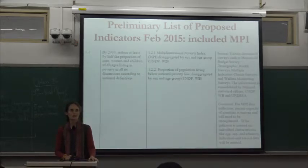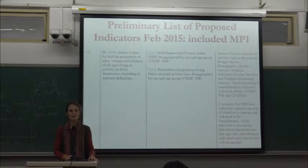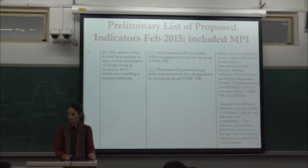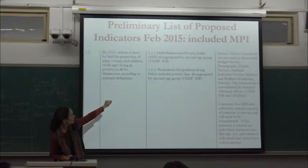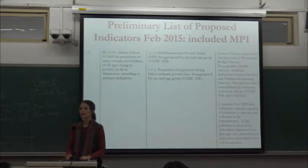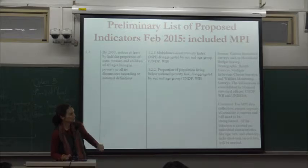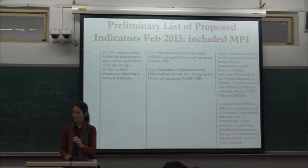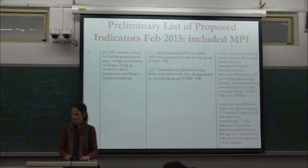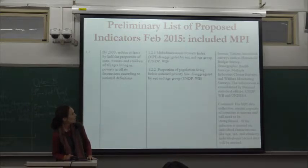The conversation on indicators started well before February 2015. A preliminary list was put forward in February 2015 that included the MPI, disaggregated by sex and age group, to be computed by the World Bank and UNDP. It also proposed the national poverty line, but did not clarify if the MPI was national or global — that is, whether it was comparable or not. The surveys mentioned include those used to compute the global MPI.